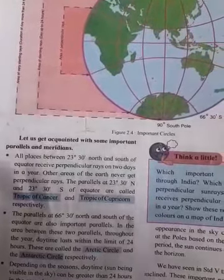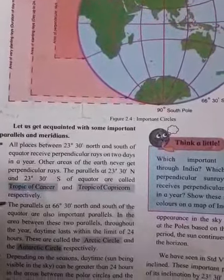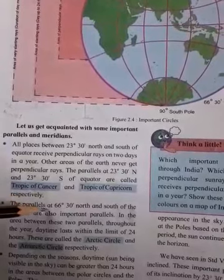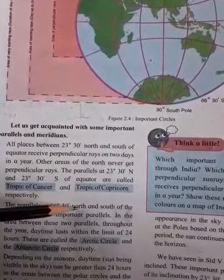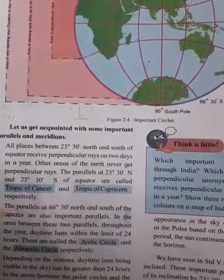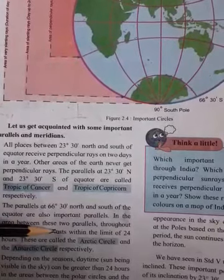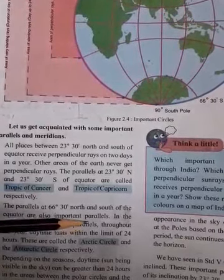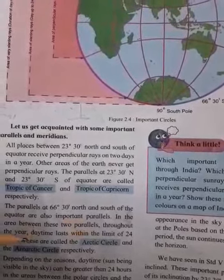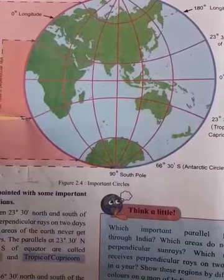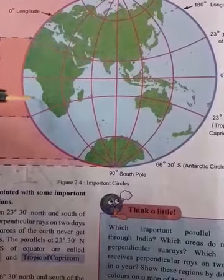The sun falls perpendicularly twice in a year in this area — on September 22nd and March 21st. The parallels at 66 degrees 30 minutes north and south of the equator are also important. Throughout the year, daytime lasts within the limit of 24 hours in the area between these two parallels. These are called the Arctic Circle and the Antarctic Circle respectively.